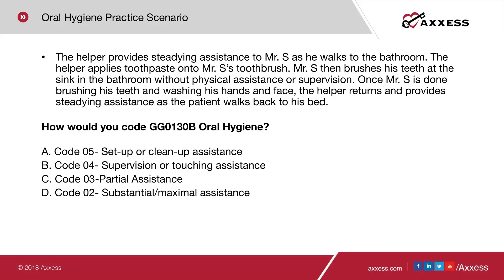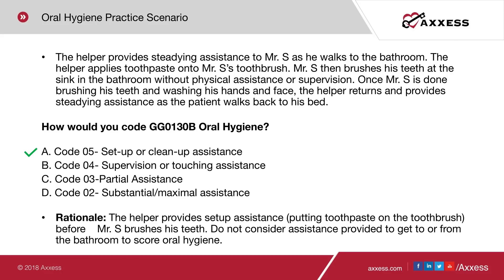Oral hygiene scenario: the helper provides steadying assistance walking to the bathroom, applies toothpaste onto Mr. S's toothbrush, then Mr. S brushes his teeth at the sink without physical assistance or supervision. Once done, the helper returns and provides steadying assistance walking back to bed. How would we code oral hygiene? Code 05, setup or cleanup assistance — the helper provided setup assistance by putting toothpaste on the toothbrush before the activity. We do not consider assistance provided to get to or from the bathroom when scoring oral hygiene.